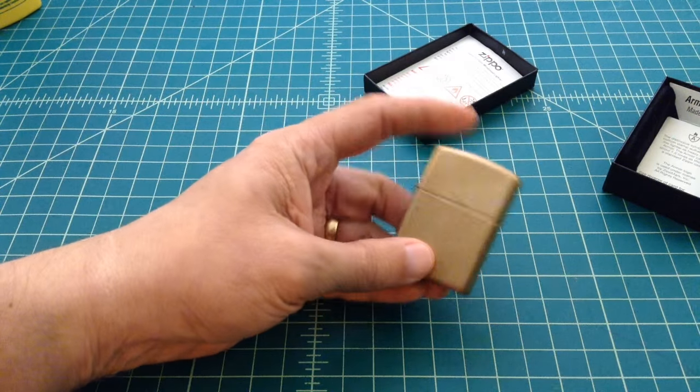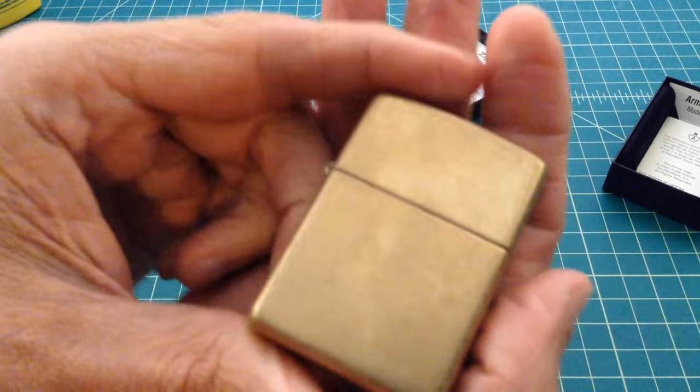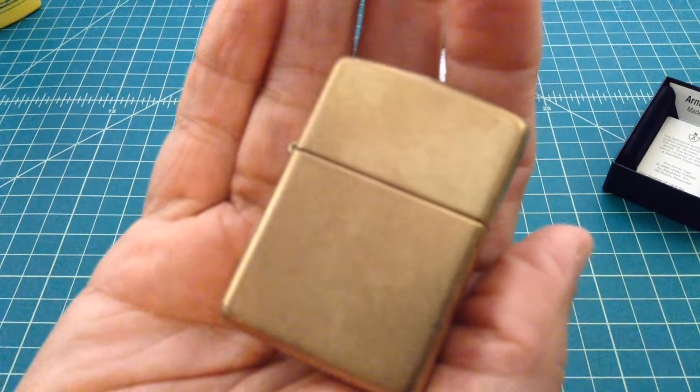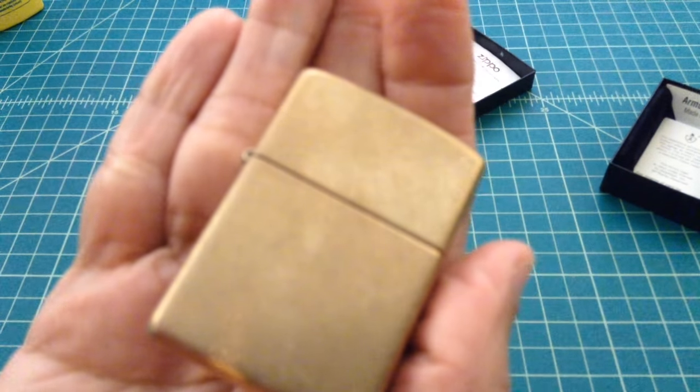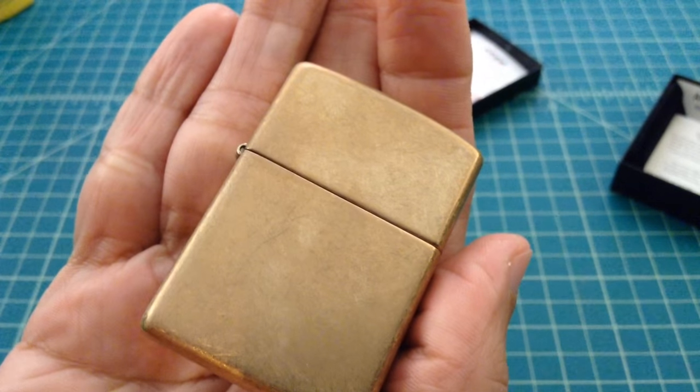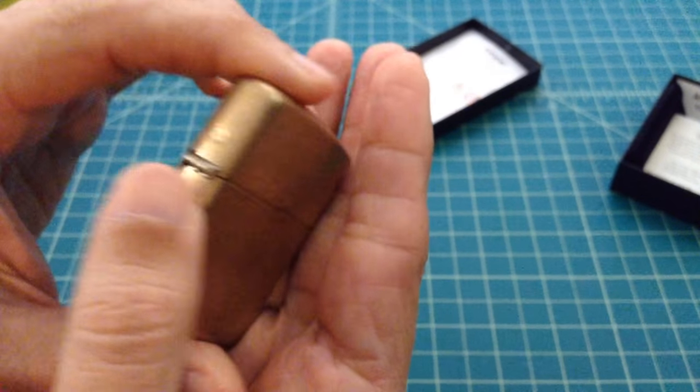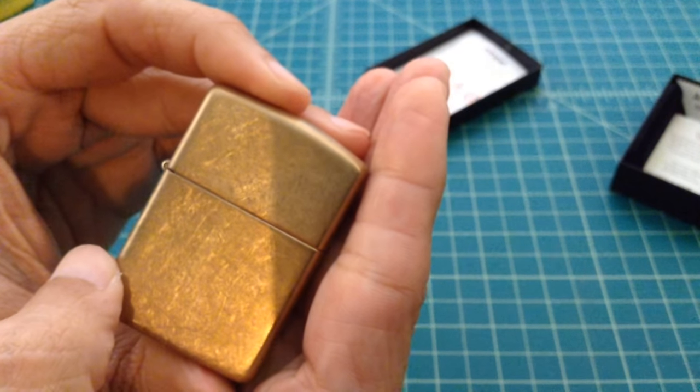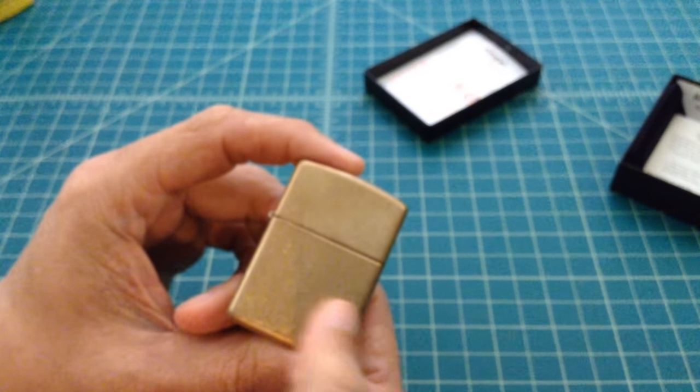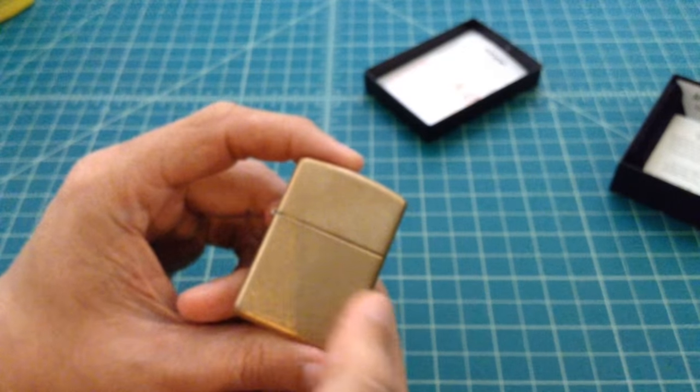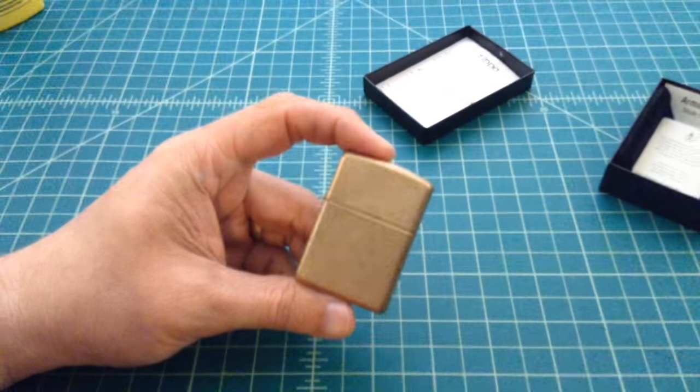But anyhow, I wanted to pick up a lighter, so this is it. This is what they call their tumbled brass. You can see it, and in the knife community we call this stone washing. It's really where they take a lighter and they throw it into a big bucket with some rocks and stuff like that or some pieces of ceramic, and they tumble it until it gets this finish. I thought that looked cool and I like brass, so I went ahead and ordered this one.